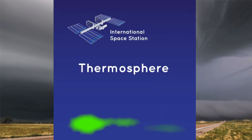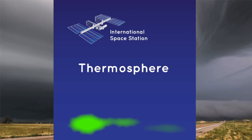Lastly, the thermosphere — in Greek, the 'heat sphere.' This is between 80 and 600 kilometers above the Earth's surface. The thermosphere is largely uninhabited, with the exception of the International Space Station. Temperature rises with height due to absorption of ultraviolet radiation by oxygen and nitrogen atoms. Temperatures in this region can reach an astounding 4,530°F during the day. The aurora borealis also usually takes place in this region.